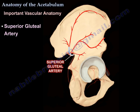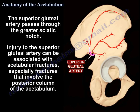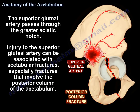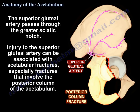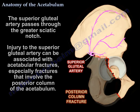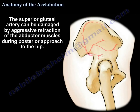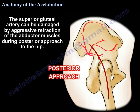The superior gluteal artery passes through the greater sciatic notch. Injury to the superior gluteal artery can be associated with acetabular fractures, especially fractures that involve the posterior column. The artery can be damaged by aggressive retraction of the abductor muscles during the posterior approach.